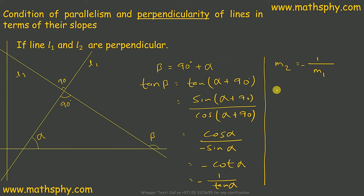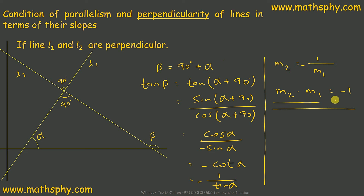Therefore, m2 times m1 equals negative 1. This tells us that if two non-vertical lines are perpendicular to each other, if and only if their slopes are negative reciprocals of each other. That is, m2 equals negative 1 over m1, or equivalently m1 times m2 equals negative 1.